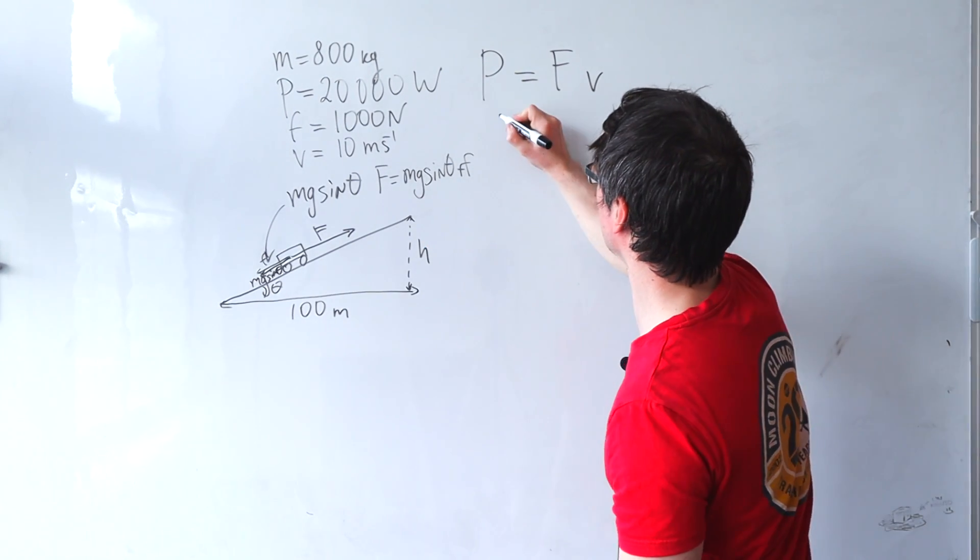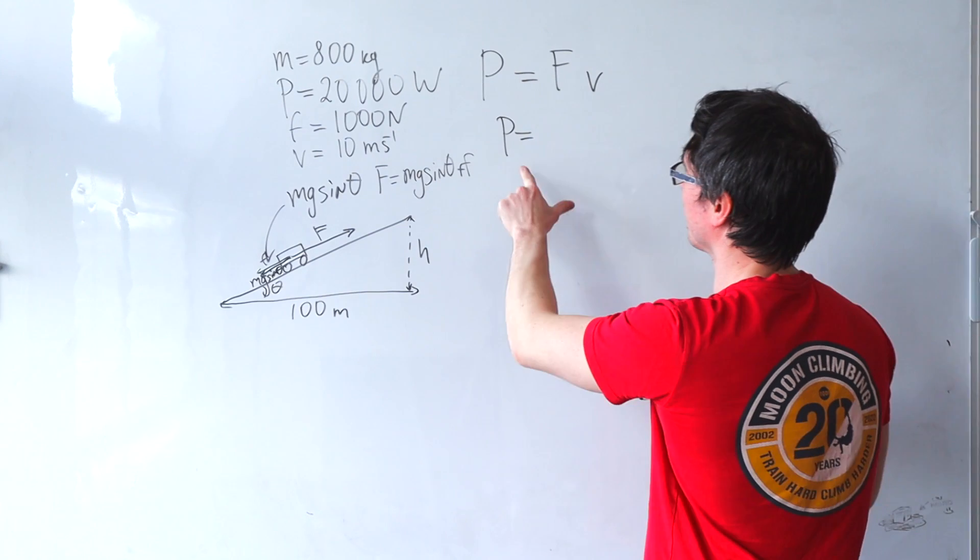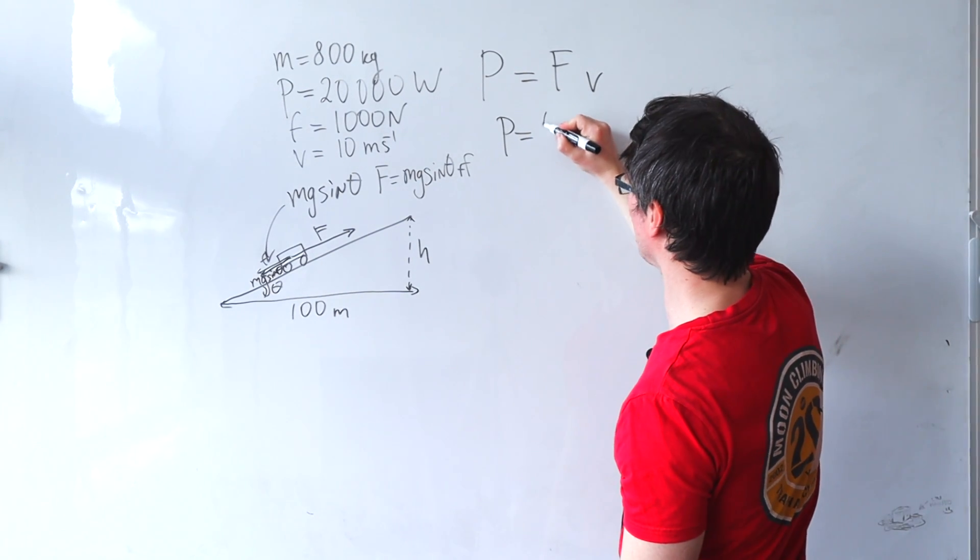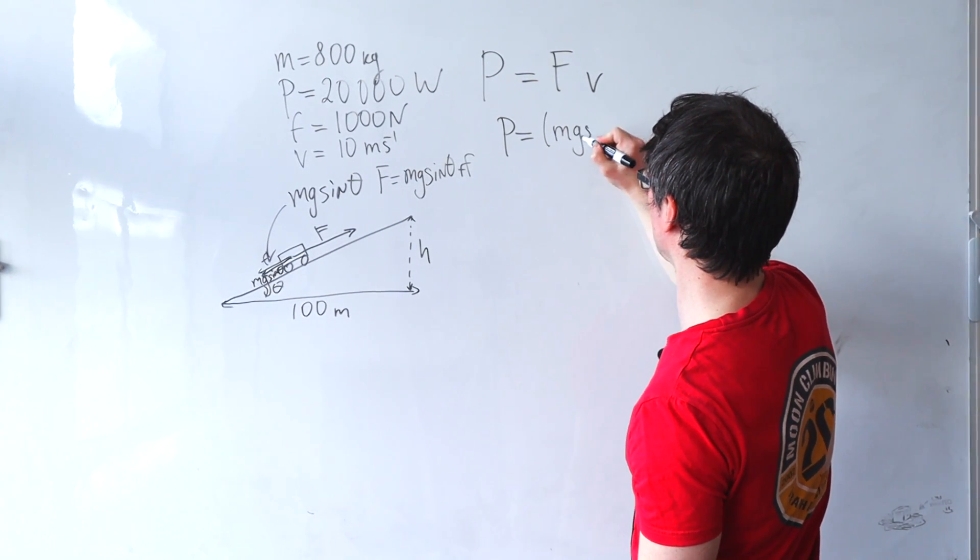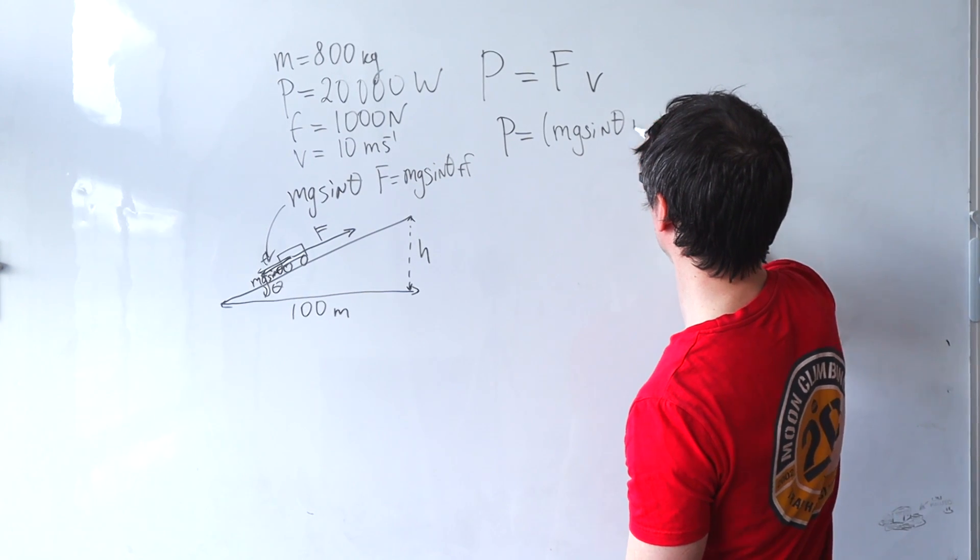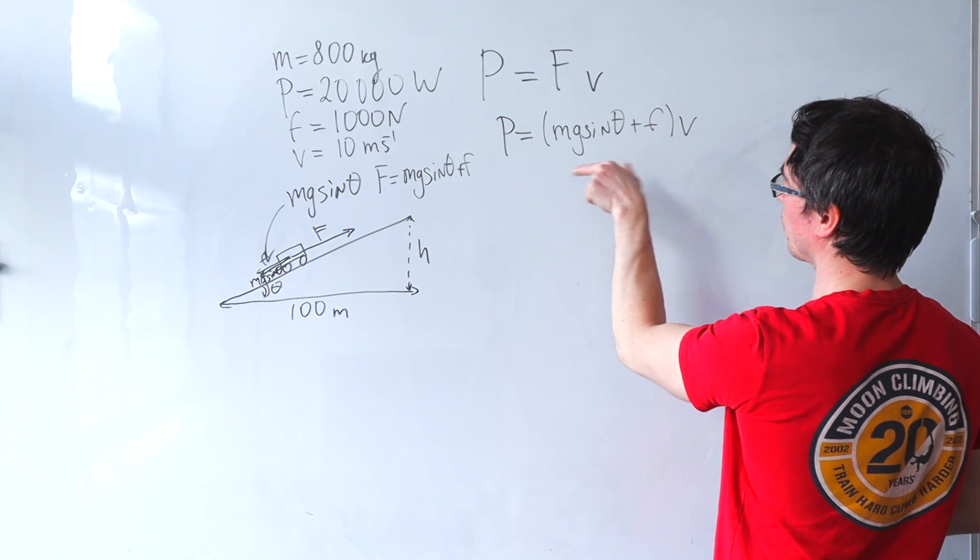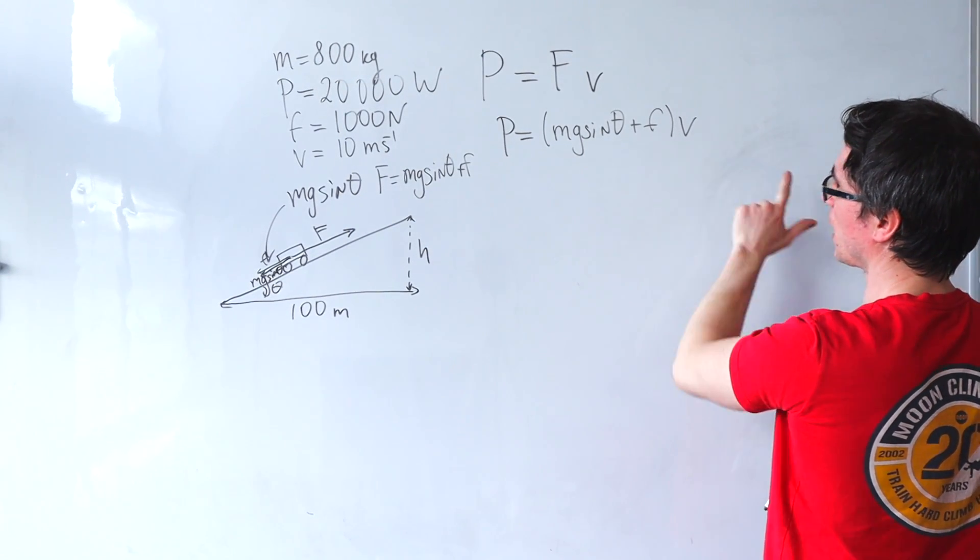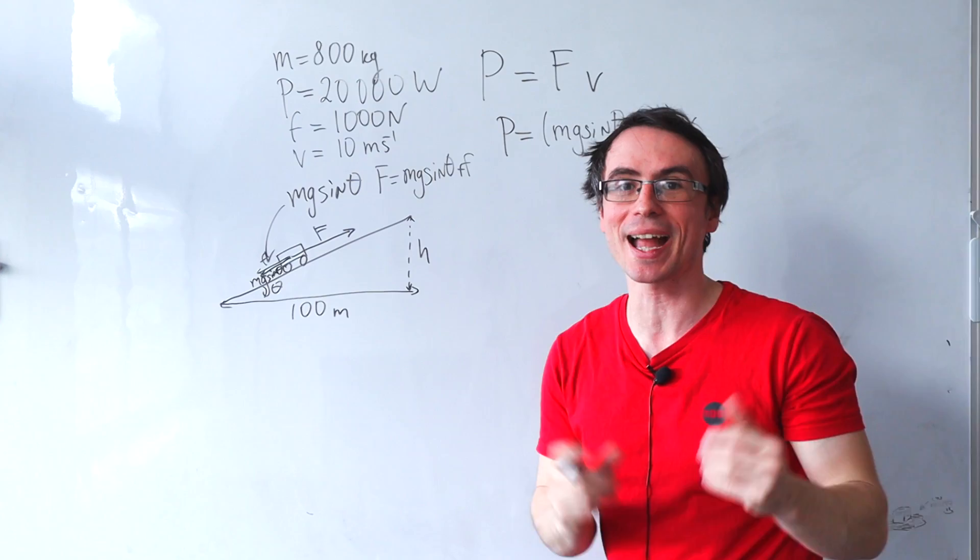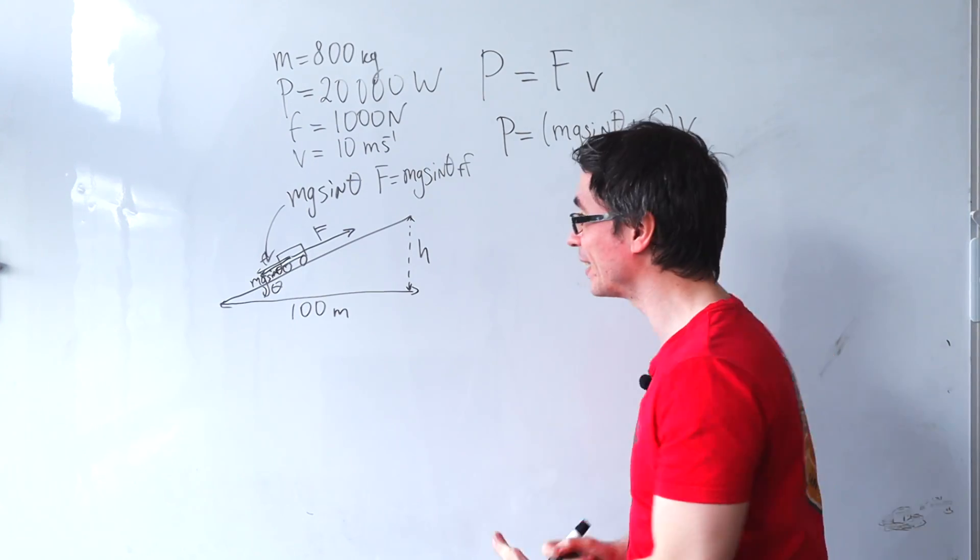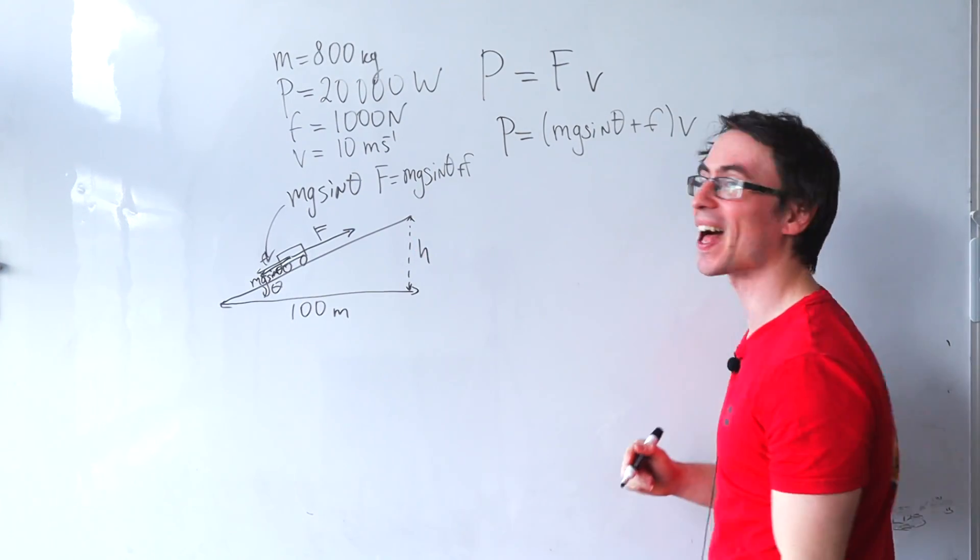Now I can plug this in and I can say that the power will be equal to mg sine theta plus f times v. I've got pretty much everything here, so I can just work out my angle, and if I work out my angle I'm in business to find this height h.